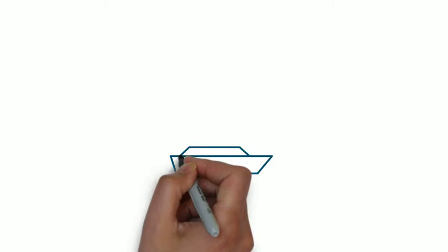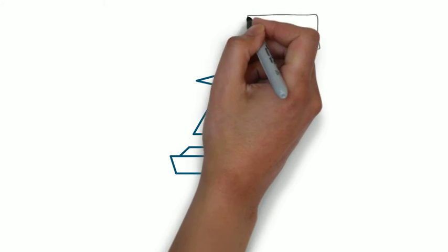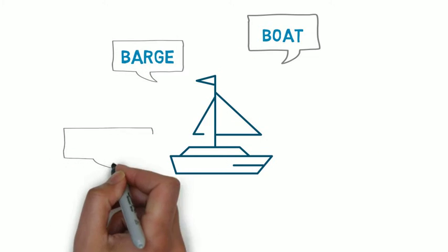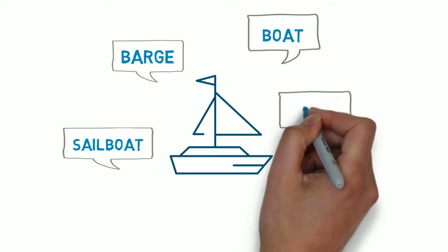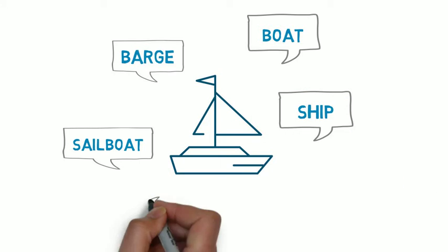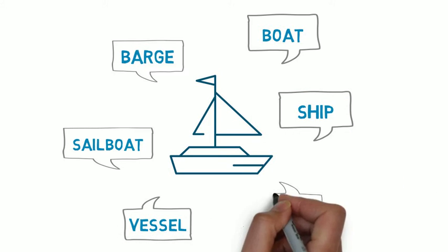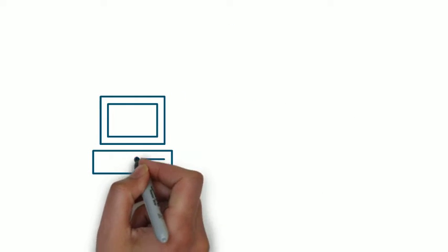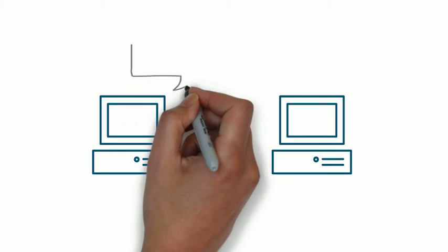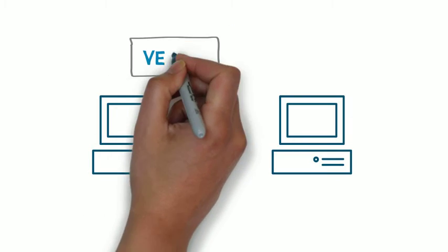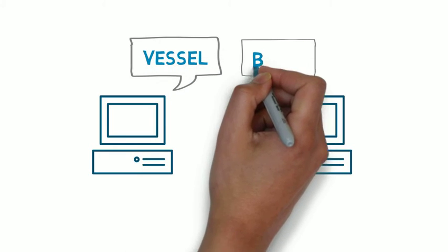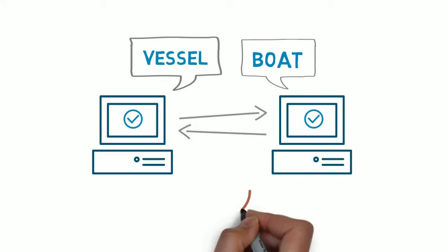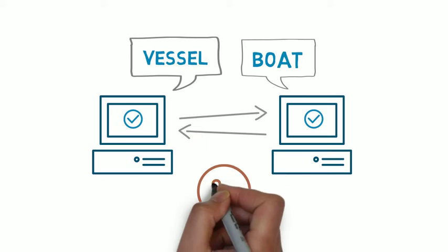What do we mean by common vocabulary? To exchange information, computer systems need to be able to speak to and understand each other when using different terms that actually mean the same thing. NEEM lets your system and my system speak to and understand each other, even if they've never spoken before, by ensuring that information carries the same consistent meaning.